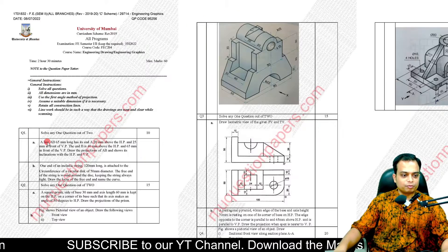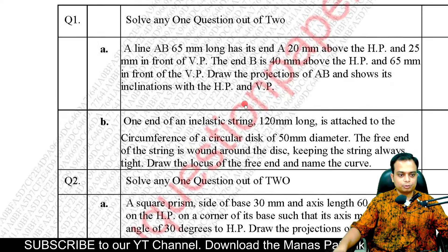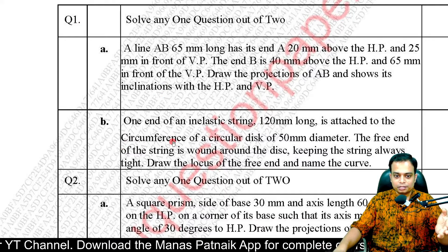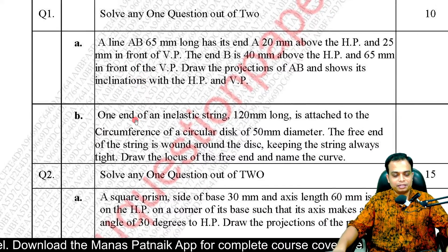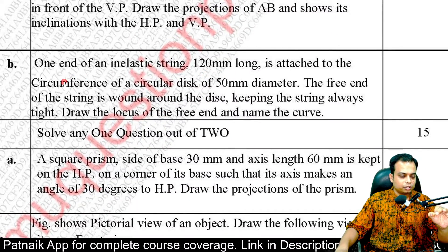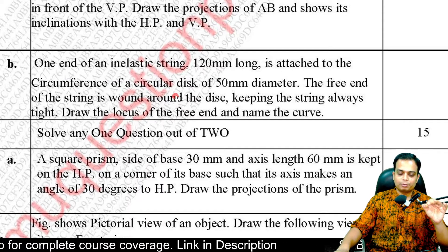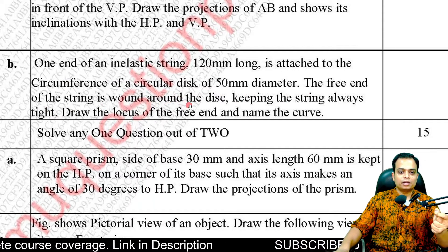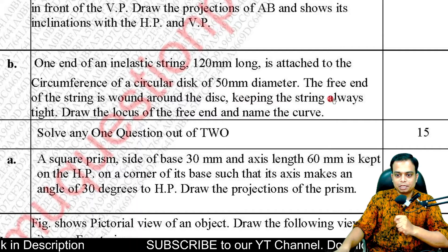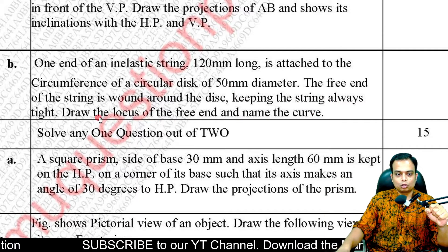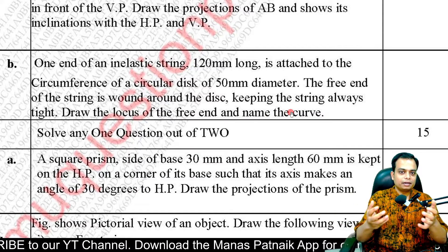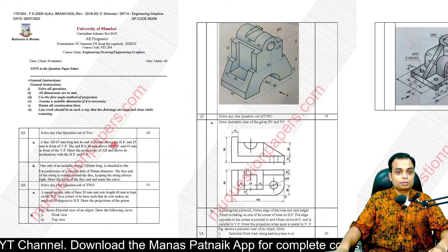Question number two, University of Mumbai. There happens to be a choice: option 1A is a problem on projection of lines, or option 1B. The easier option is projection of lines, obviously. But let me read this one: one end of an inelastic string 120mm long is attached to the circumference of a circular disc of 50mm diameter. The free end of the string is wound around the disc, keeping the string always tight. Draw the locus of the free end and name the curve. This is a simple problem but it is time consuming; given the choice I'll go for the projection of lines problem anyway.